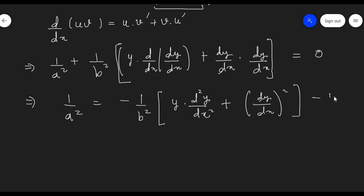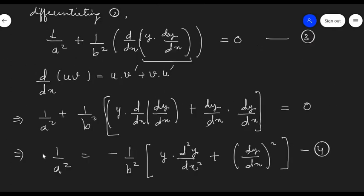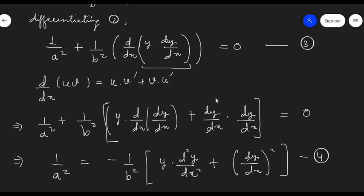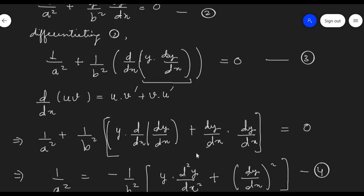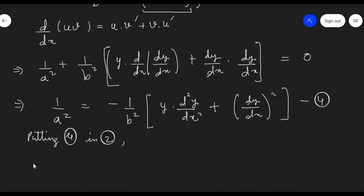From equation 3 we can calculate the value of 1 / a²: 1 / a² equals minus (1 / b²) multiplied by [y · d²y/dx² + (dy/dx)²]. Let's call this equation number 4. Now let's substitute equation 4 into equation 2.